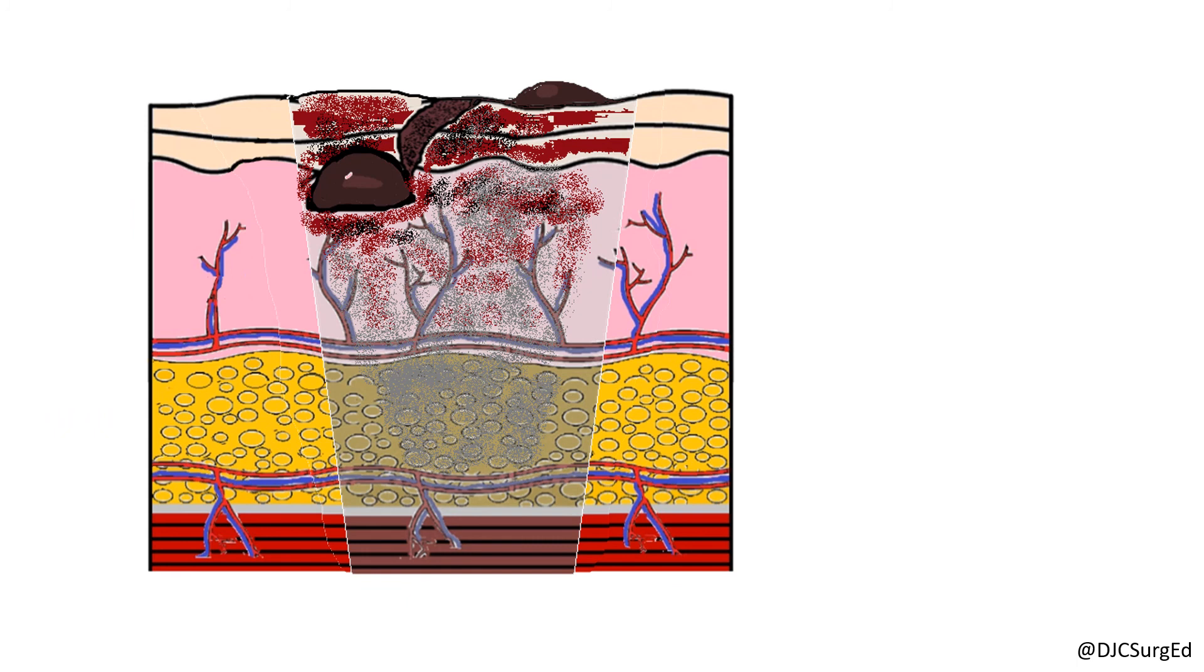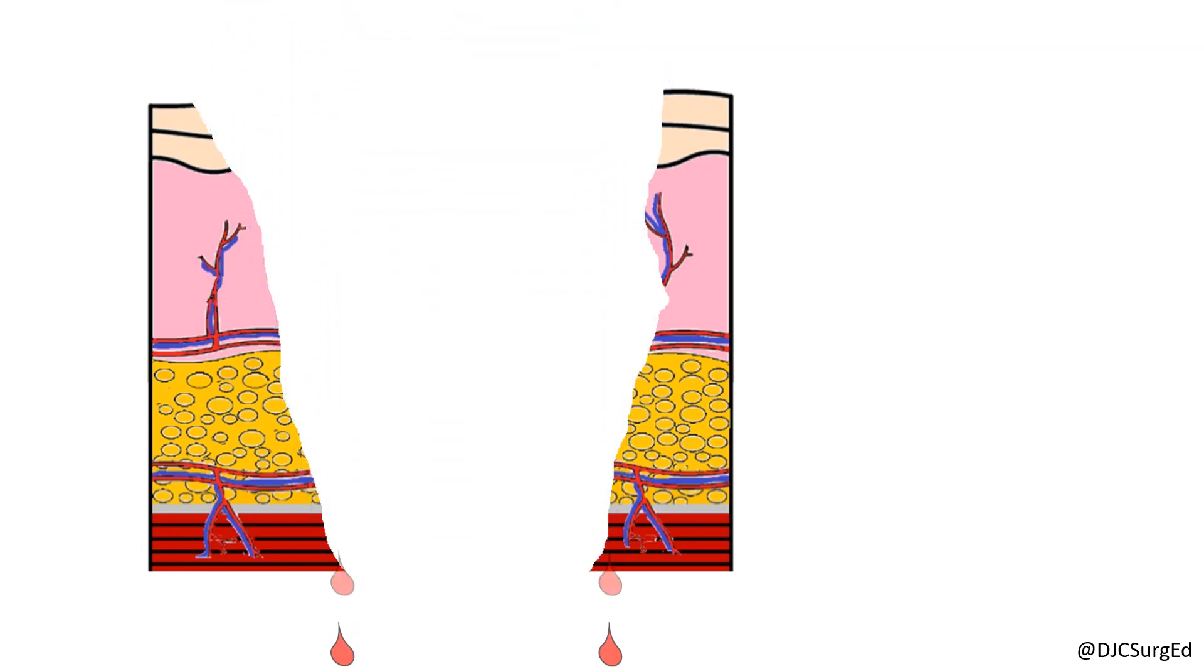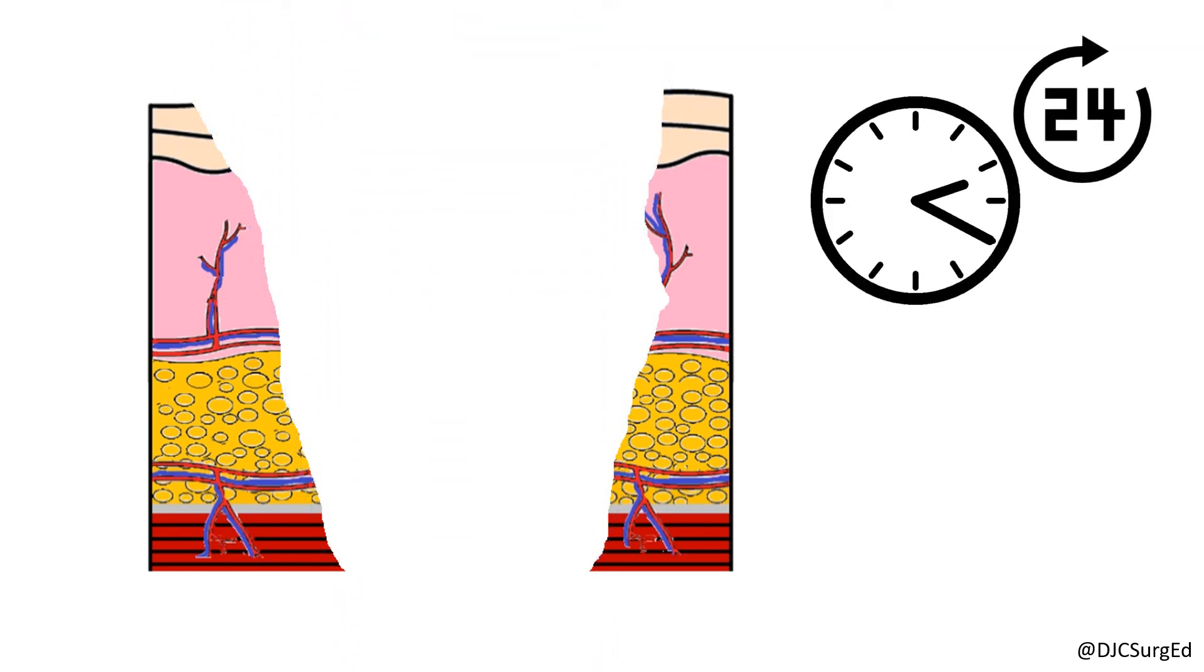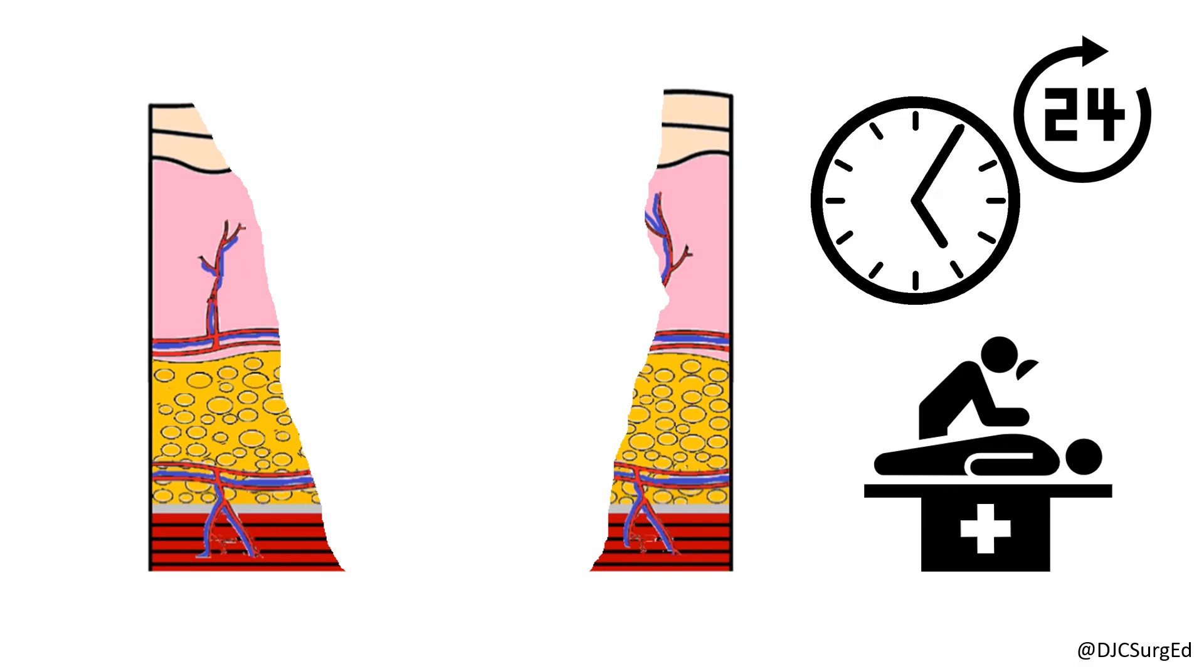The mainstay of treatment is aggressive early surgical debridement. Debridement should extend back to viable soft tissue and muscle that exhibits brisk bleeding. Return to the operating room within 24 hours or earlier for a second look should be strongly considered.